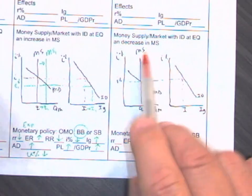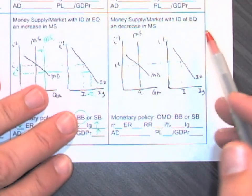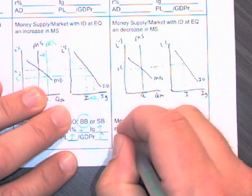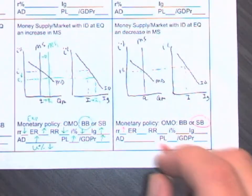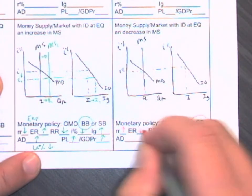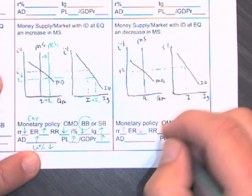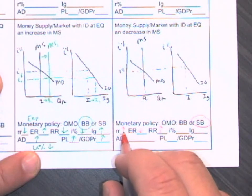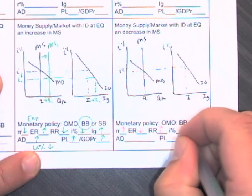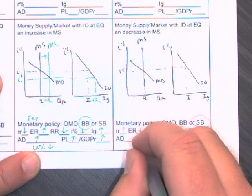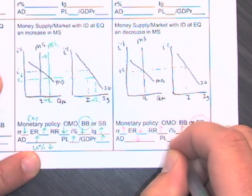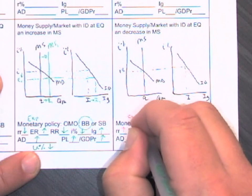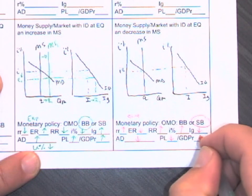And now, if we're going to have a decrease in the money supply, that is going to be something contractionary. So it's sell bonds to make small bucks, raise the reserve ratio, which will lower excess reserves so banks can't loan out as much because their required reserves, the two capital R, is what they have to keep. Now that's going to make interest rates go up, makes investment go down, aggregate demand goes down, causes price levels to decrease, which is our contractionary policy.